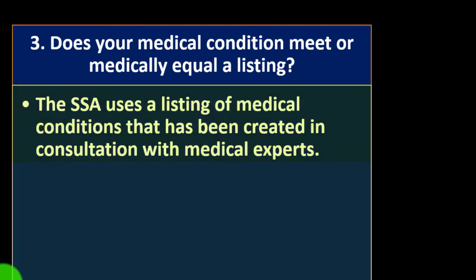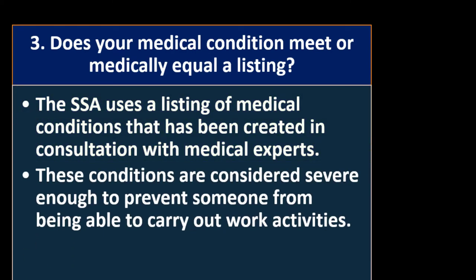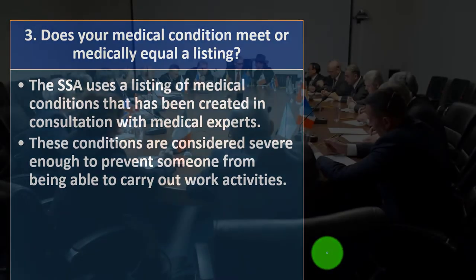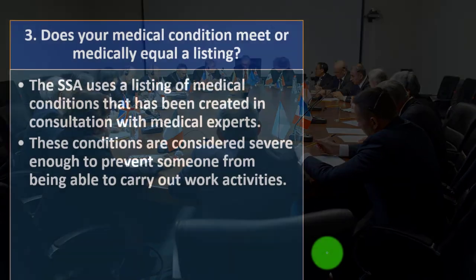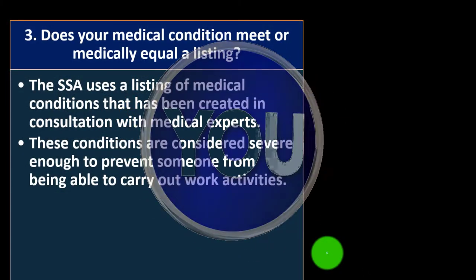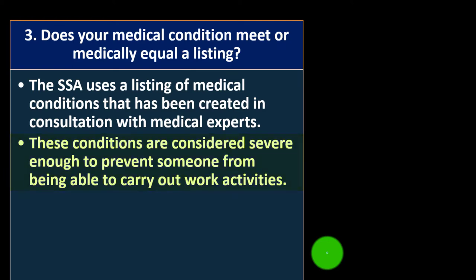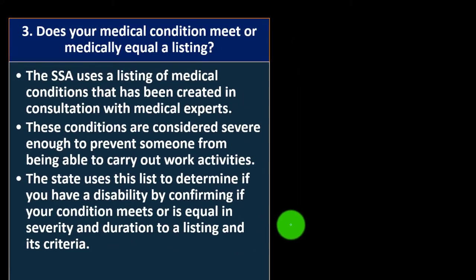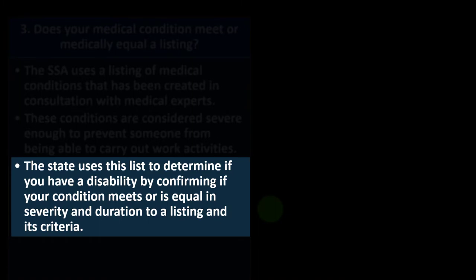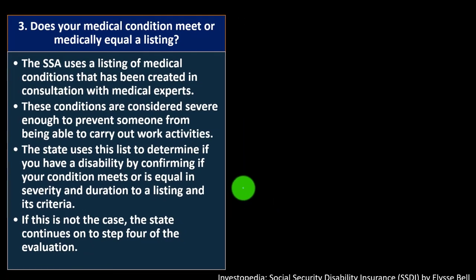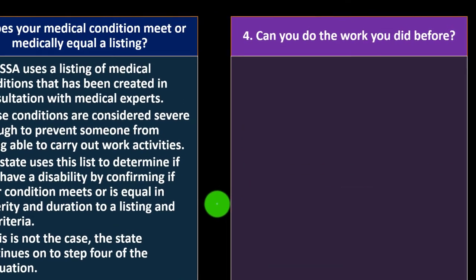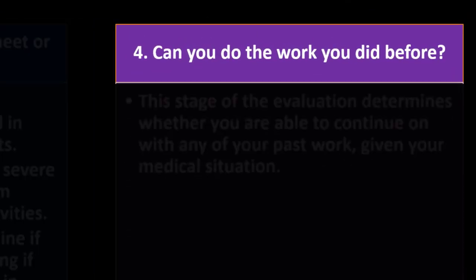If your condition is considered severe, the agency moves to step three: Does your medical condition meet or medically equal a listing? The SSA uses a listing of medical conditions developed with medical experts. These conditions are considered severe enough to prevent someone from carrying out work activities. The state confirms whether your condition meets or equals the severity and duration of a listed condition. If not, the evaluation continues to step four.